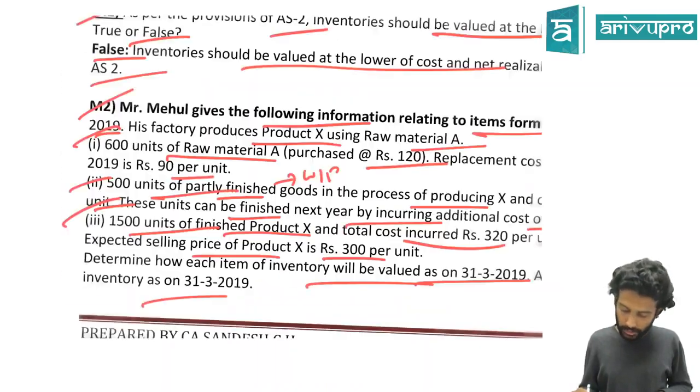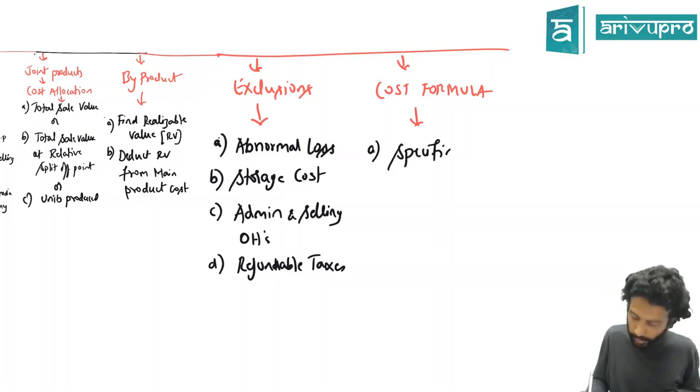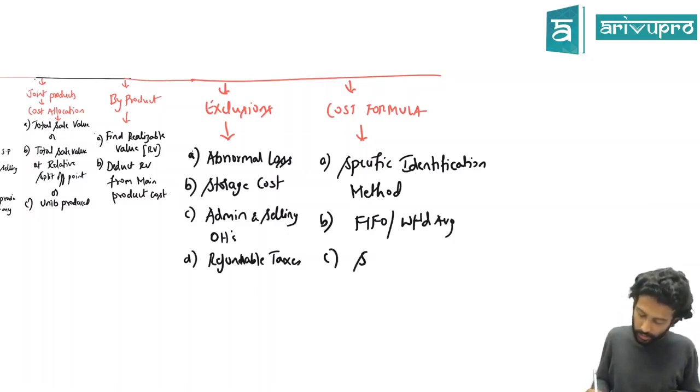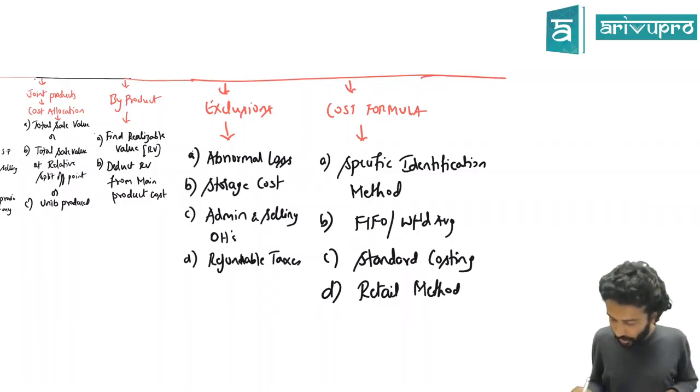Next we learned something known as the cost formula. Cost formula could be what? Either you can use specific identification method, mango example remember, or you can go for FIFO slash weighted average, or you can also find out the cost using standard costing principle. Standard costing, marginal costing you ought to learn. You can use that also, or you can go for retail method. This is your cost formula.